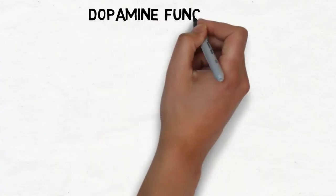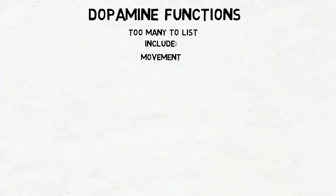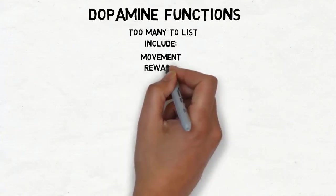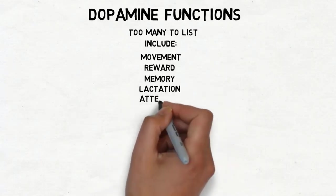Like any neurotransmitter, the functions of dopamine are complicated. We are not here to discuss dopamine in depth, instead to get a basic understanding. Lack of dopamine is linked to movement disorders like Parkinson's disease. It's also associated with the processing of rewarding experiences. Dopamine also plays a role in many other functions.